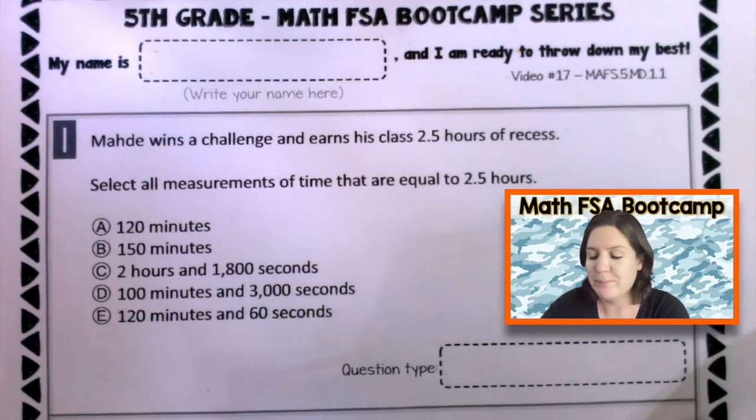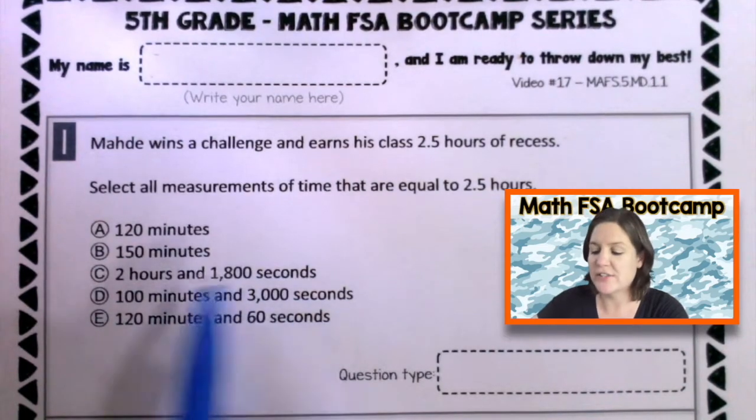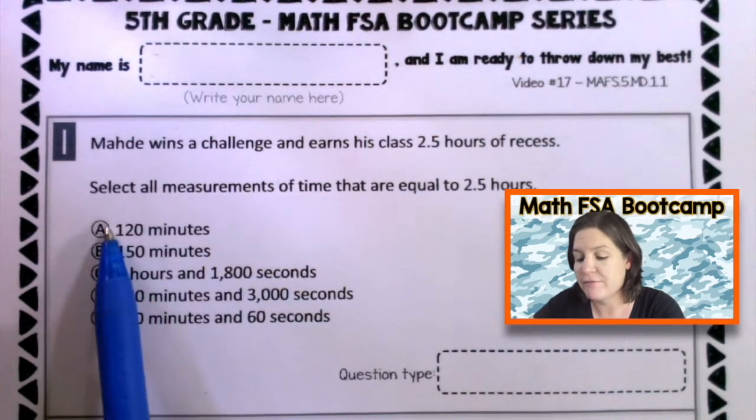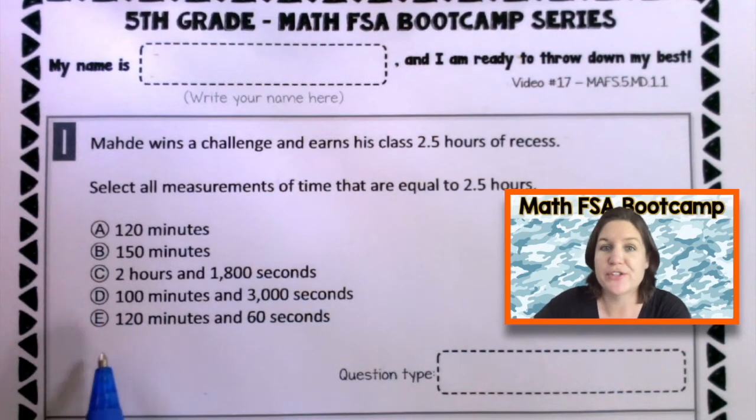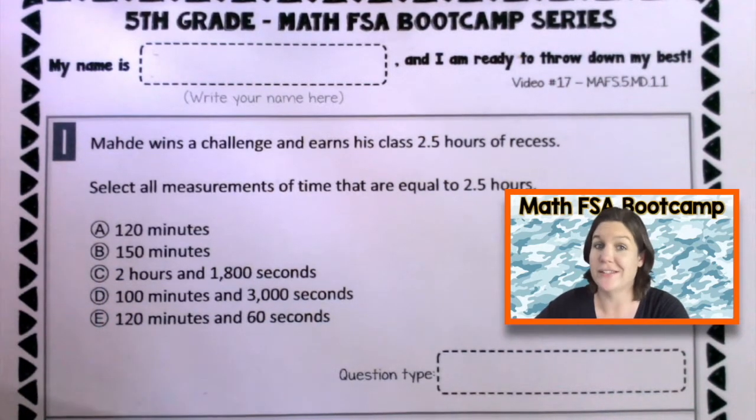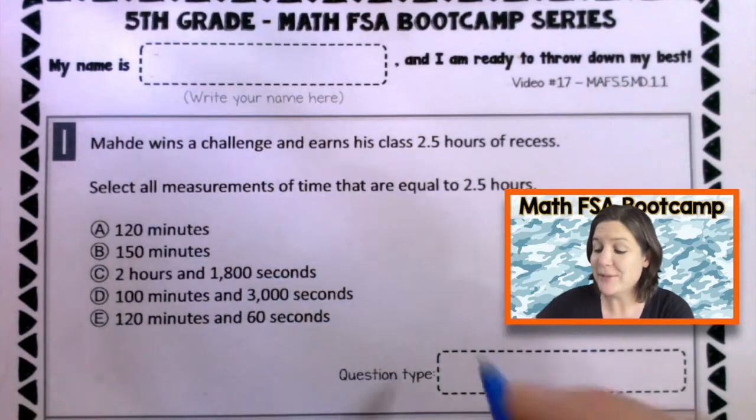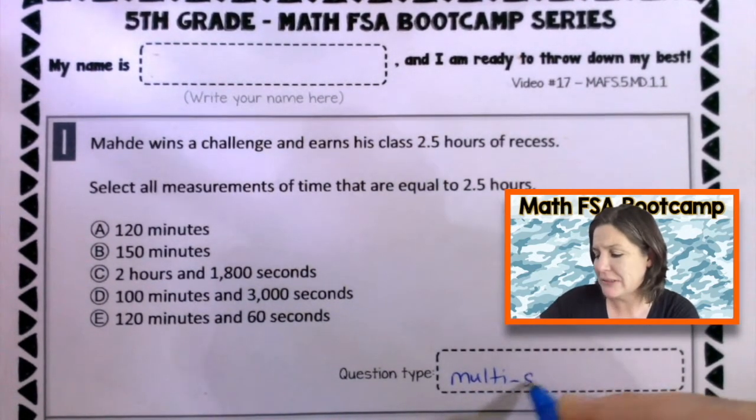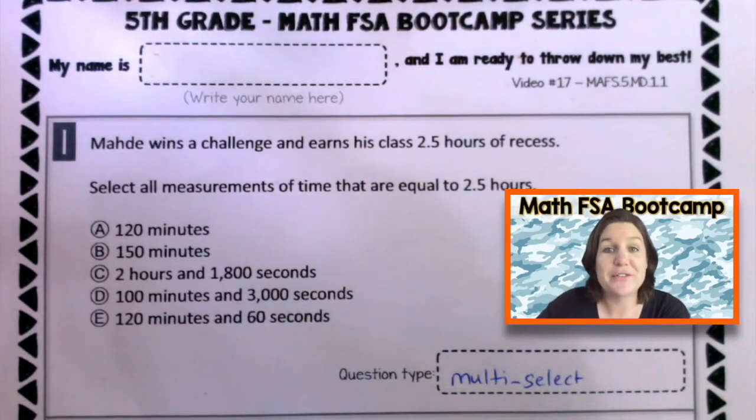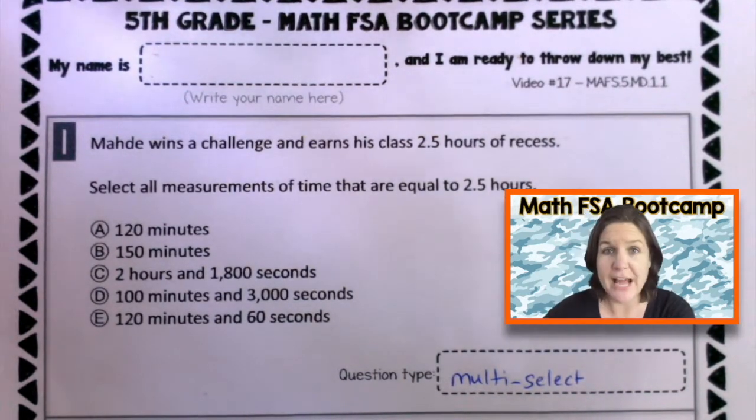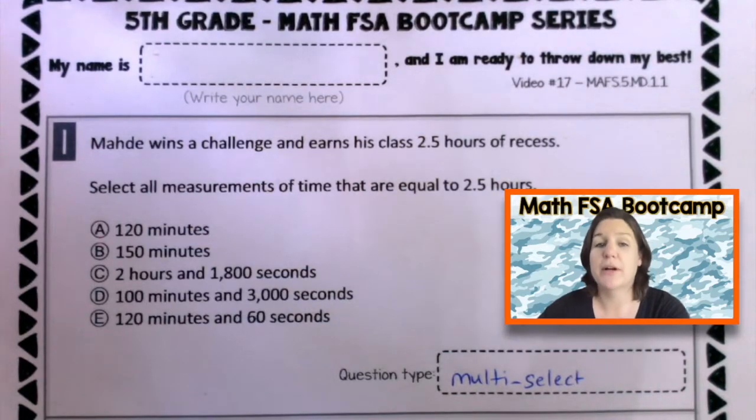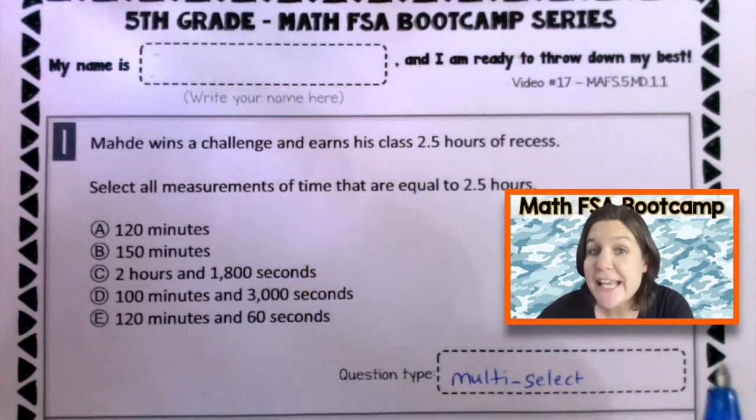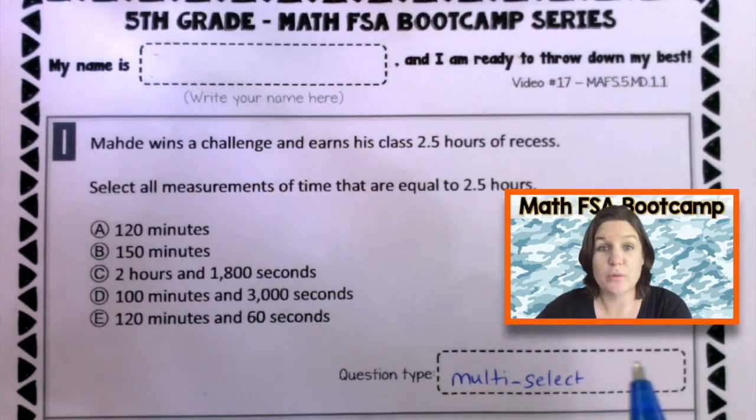All right, fifth grade, welcome back. Before we even get started, let's identify the question type. I'm seeing five answer choices here. So, what kind of question do you think this is? Yeah, it's going to be a multi-select. Jot that down if you did not already. Now we are going to read it and mark up our text. Make sure that you're paying attention so you can see if you made any mistakes, and that way you can adjust your work.